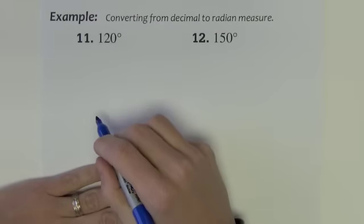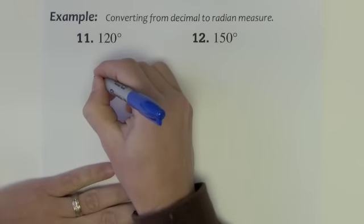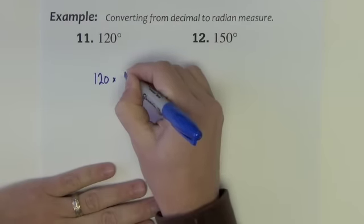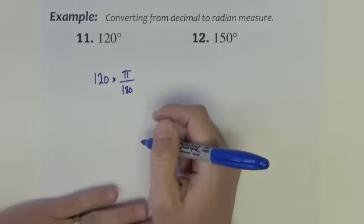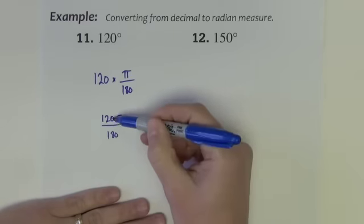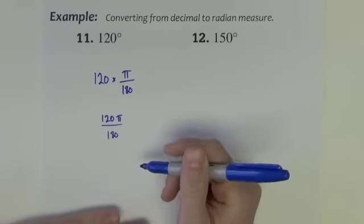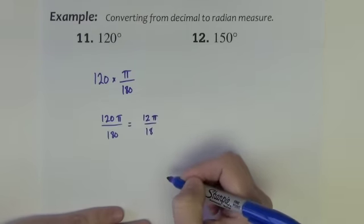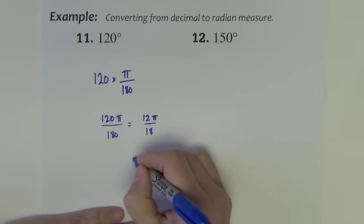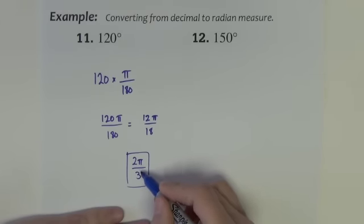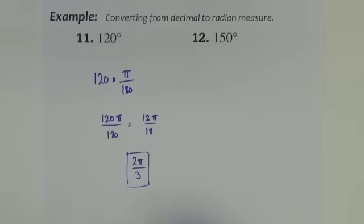Let's try that a couple of times. How do we convert 120 degrees to radian measure? You take your degree measure and multiply it by pi over 180. This is the same as 120 pi divided by 180 — just reduce the fraction. The zeros divide out, giving 12 pi over 18; divide both by 6, and we get 2 pi over 3. Equivalently, 2 thirds pi, but you typically see pi placed in the numerator of the fraction.